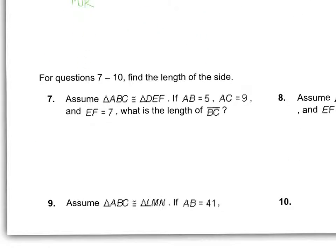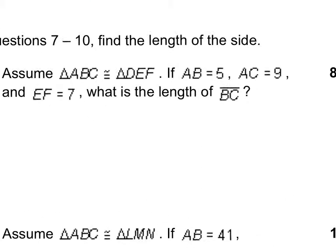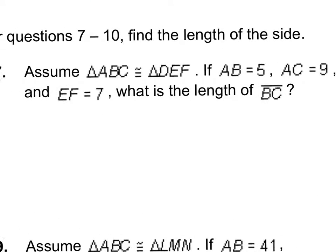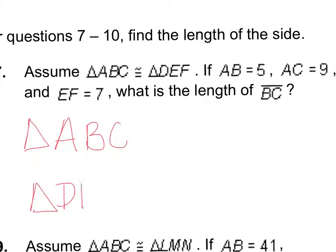Number seven says find the lengths of the side. Writing them on top of each other — triangle ABC and triangle DEF — they want the side length of BC. Since those are the last two letters, that means it's the same as EF, and they told us EF was seven, so BC is seven.